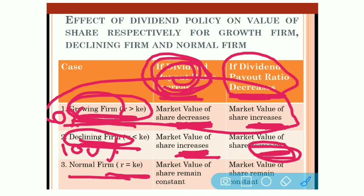For a normal firm where R is equal to K, there is no effect on the market value of the share. Whether the payout ratio increases or decreases, the market value of the share remains constant. Therefore, there is no optimum payout ratio for a normal firm. This is all about Walter's model.